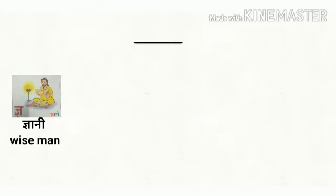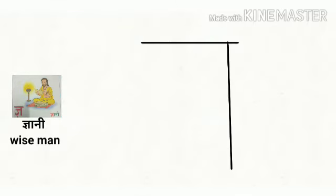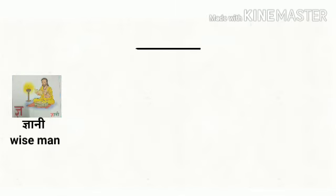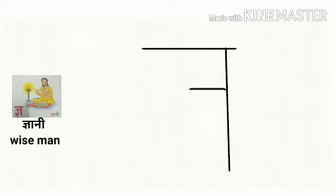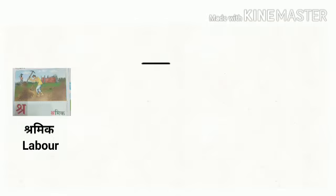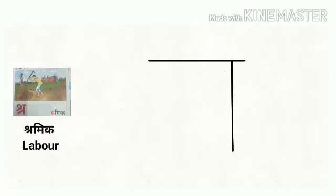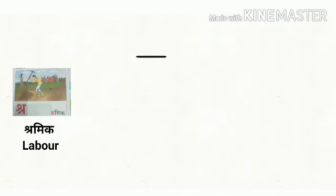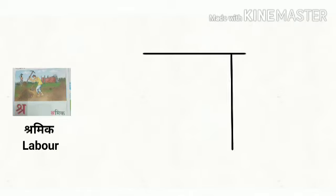Gya se Gyaani — wise man. Gya se Gyaani jo paat padhaay, kabhi na usko bhool paayi. Shra se Shramik — labor. Shra se Shramik, shram hai karta. Din bhar wah mehenat karta.